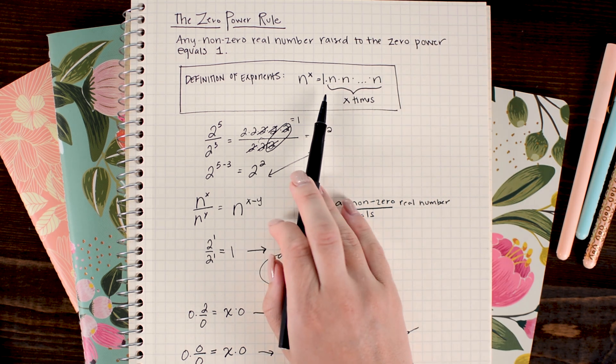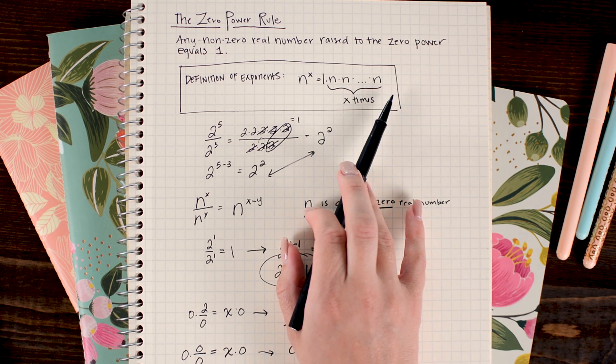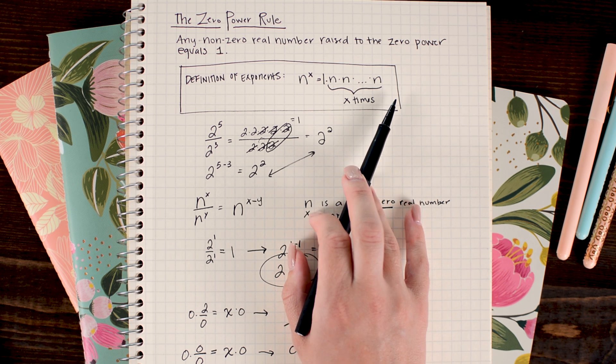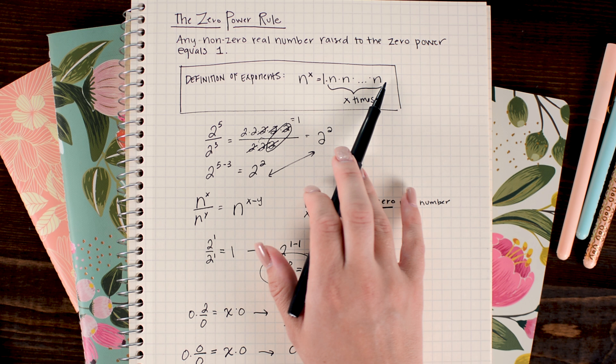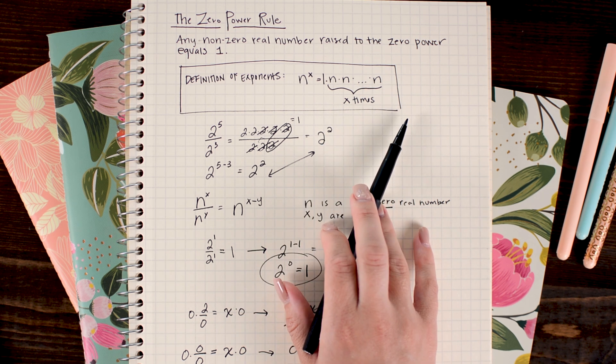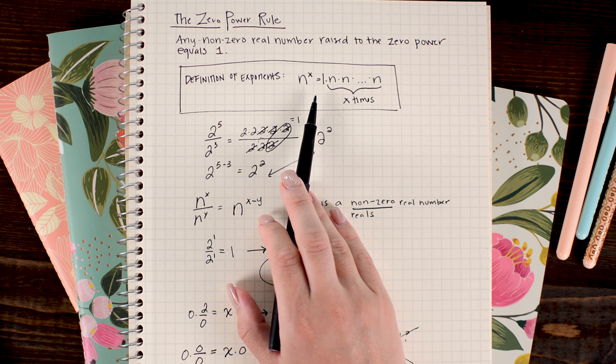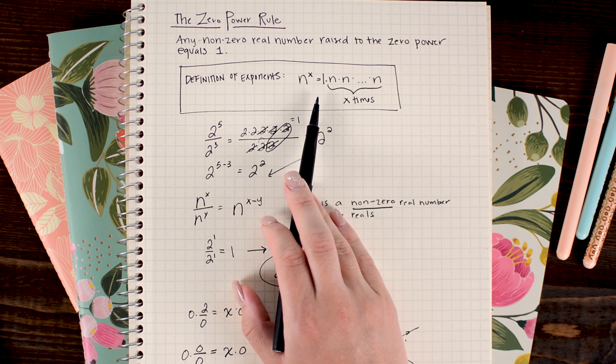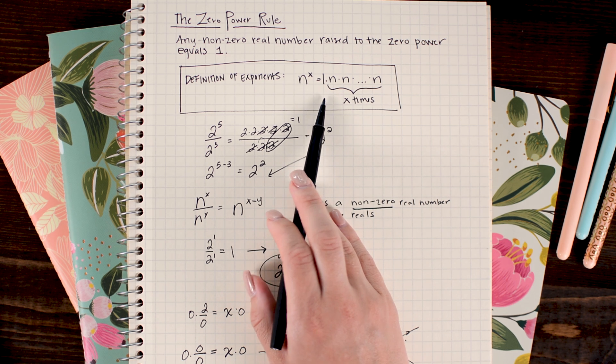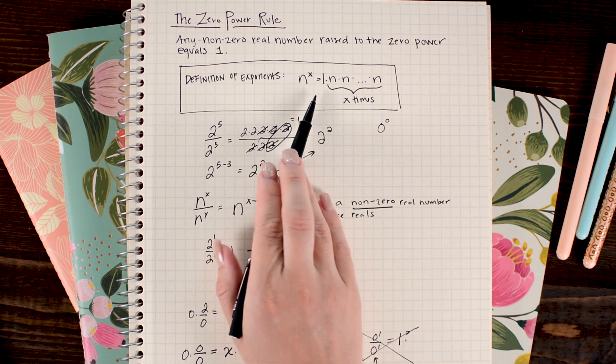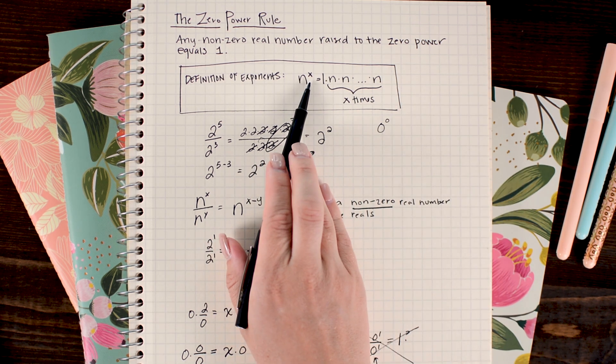And some textbooks will give an alternate definition of exponents to kind of get around this issue. And what they will do is they will include a 1 being multiplied in front of the n's. And what that does is it still holds for all n's and all x's, because I'm just multiplying by the identity.